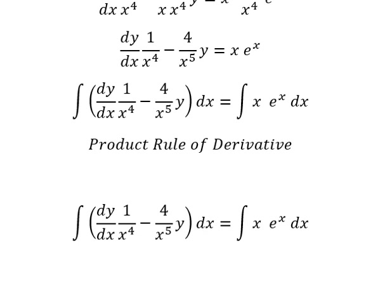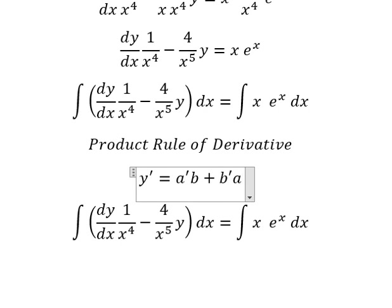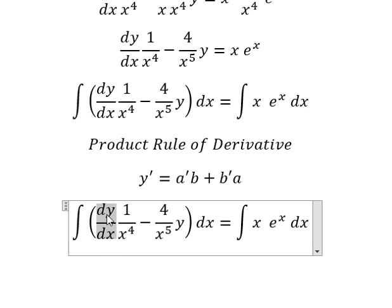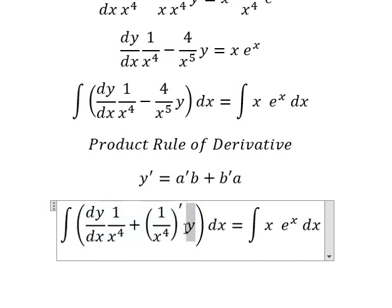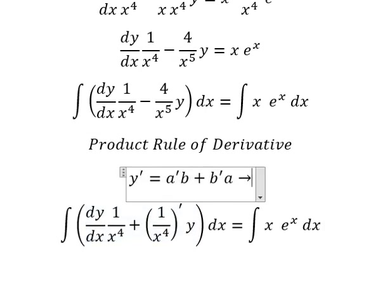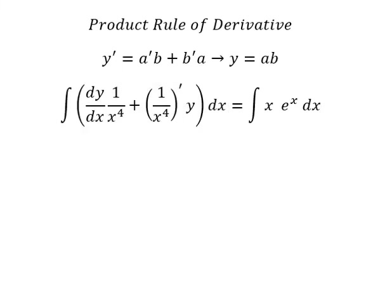We know that the first derivative of y equals the first derivative of a multiplied by b, plus the first derivative of b multiplied by a. So if we do the integration, we get y equals a times b.